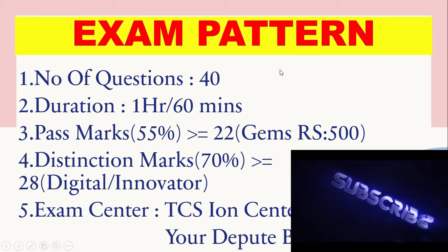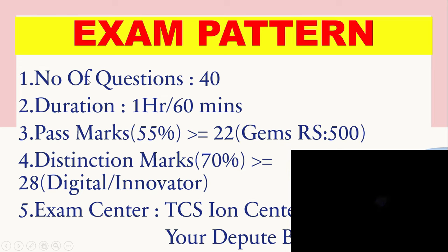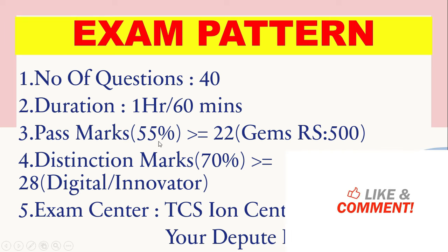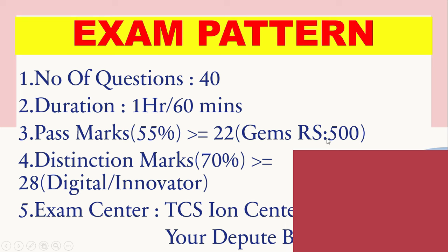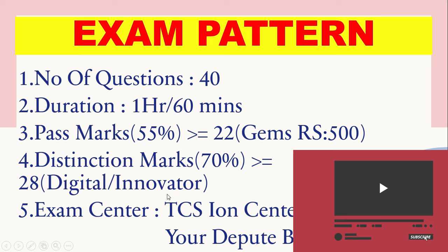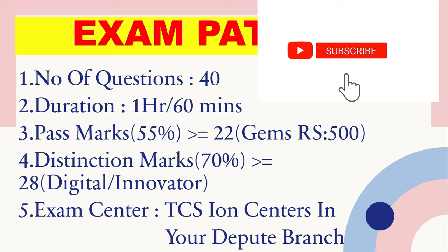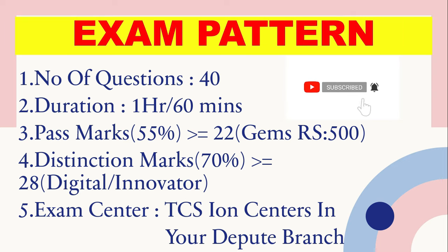Exam pattern: the first round is MCQs. Number of questions is 40, duration is 1 hour or 60 minutes. Pass marks are 55%, which is greater than or equal to 22 out of 40. For distinction marks, you need 70% — greater than or equal to 28 out of 40 — to clear the MCQ round with distinction. Exam centers are TCS ION centers. After clearing MCQs, within one week you will get a hands-on round. If you clear that with distinction, your technical track will be cleared.